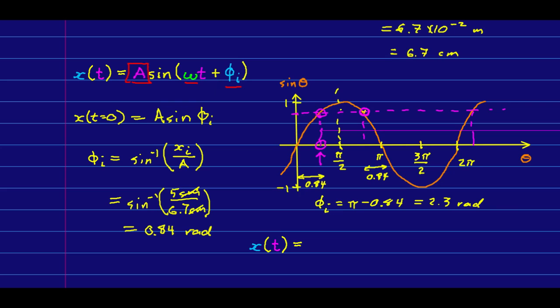So we can now collect this all together and write our position as a function of time. There's the amplitude multiplied by sine of our angular frequency, which was 8.9 inverse seconds times t. This has to be a function of time, plus our initial phase.